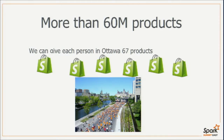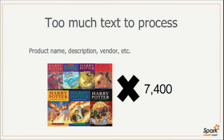There are lots of products listed. We have more than 150K merchants and 60 million products listed. To put that in perspective, Ottawa, the capital of Canada, has 900,000 people — if we wanted to give each person something from a Shopify store, they'd end up with 67 products each. There's also so much text to process. When you combine product description, product name, and vendor for all these products, it's equal to reading the Harry Potter series 7,400 times front to back. So there's no way humans can go through this — we have to come up with cool technologies.